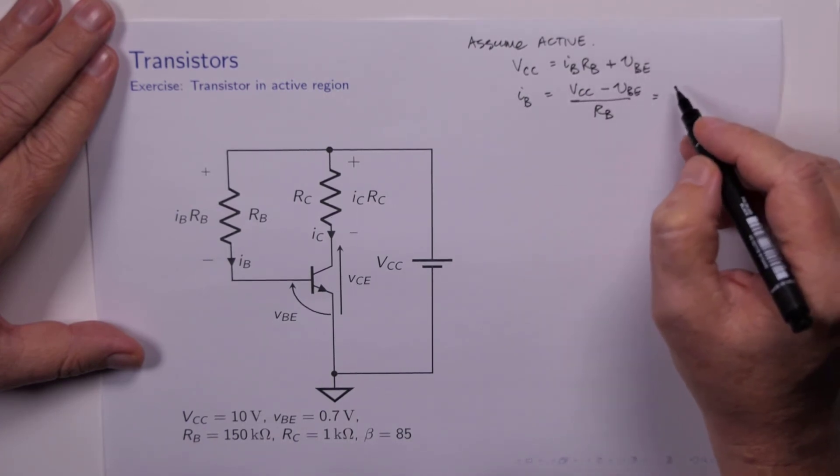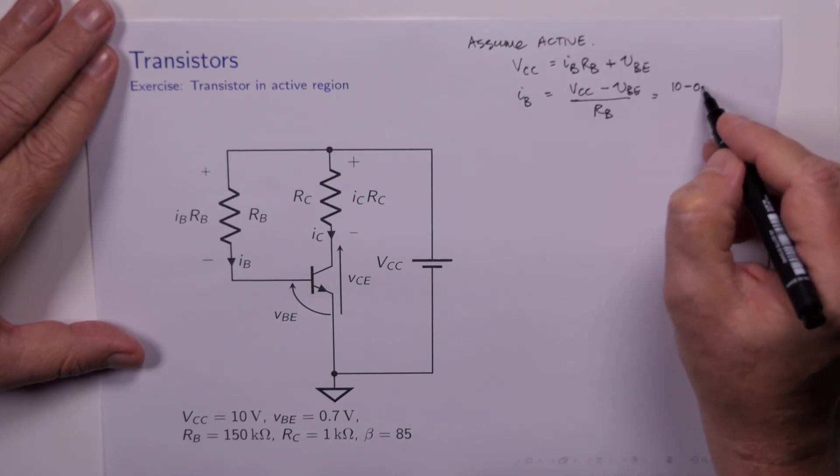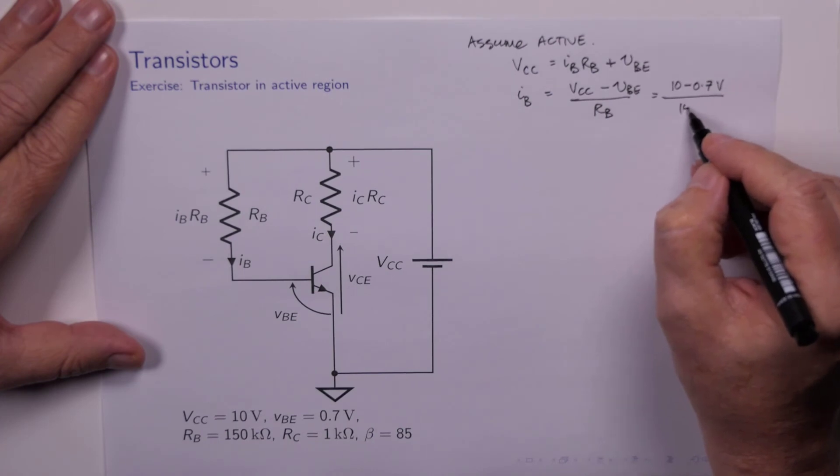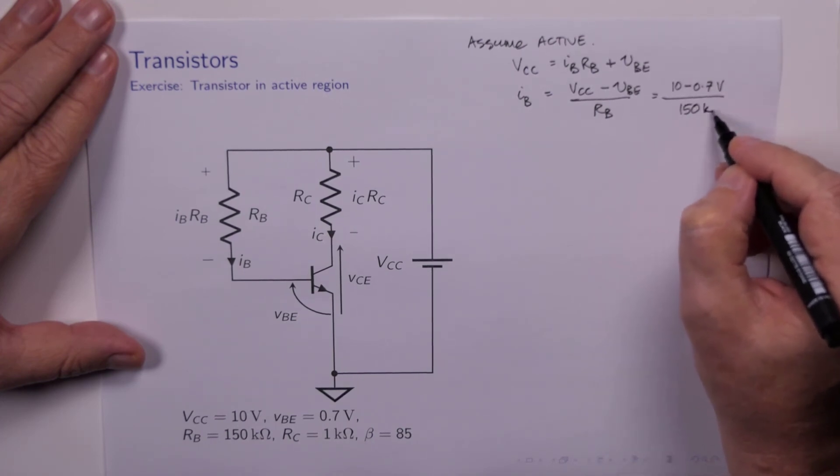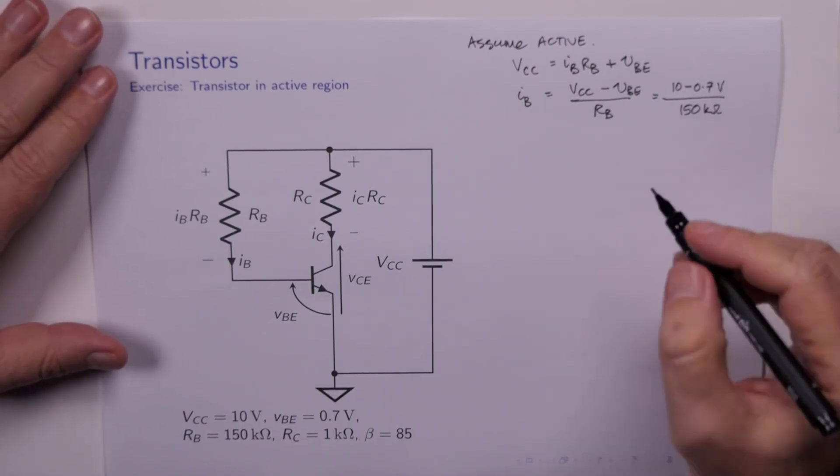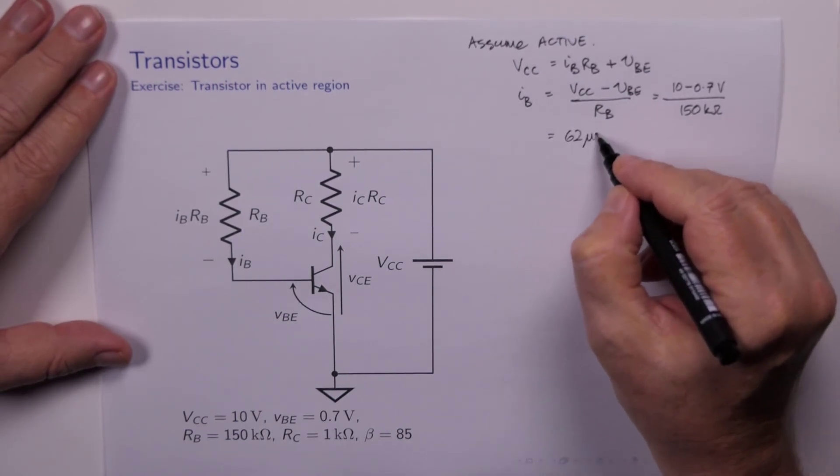then VCC equals IB RB plus VBE. So IB is VCC minus VBE over RB, which now is 10 minus 0.7 volts over 150k ohms. And that is, if I'm not mistaken,